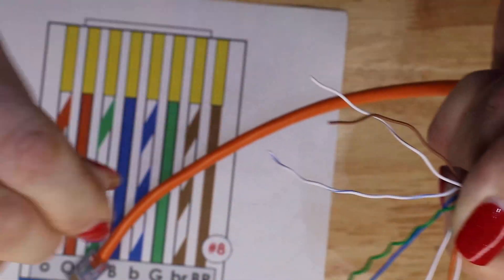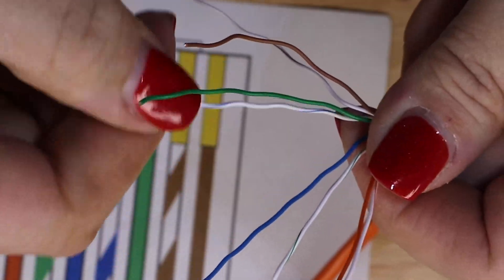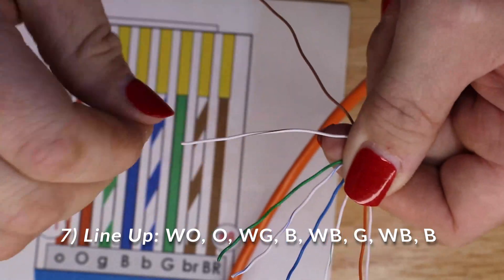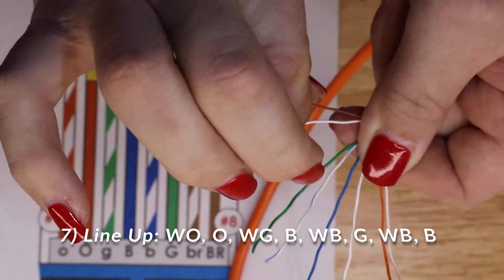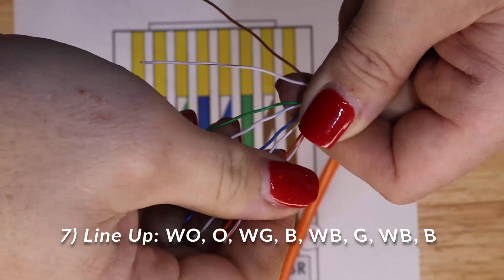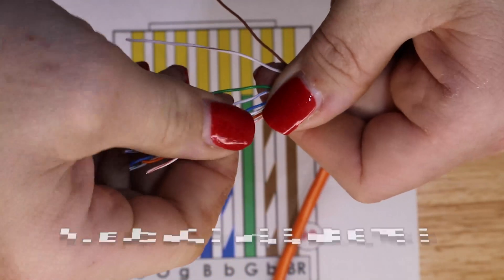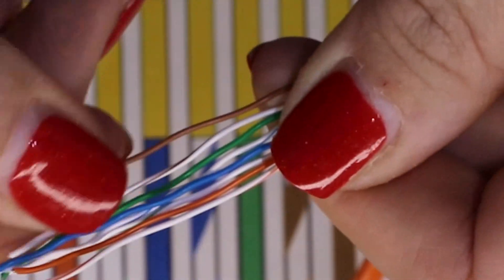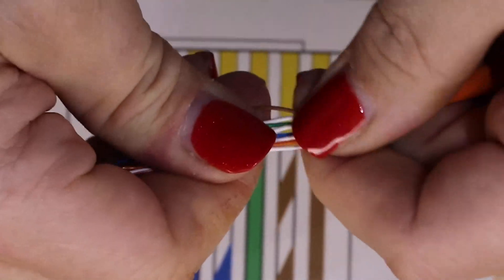You may have noticed that I'm lining these wires up in a particular order. We're starting with the striped orange and then orange, and then we jumped over to the striped green, then solid blue, striped blue, then solid green, striped brown, and brown. You must line these up in this specific order so that you can put the CAT6 jack head on the wires.